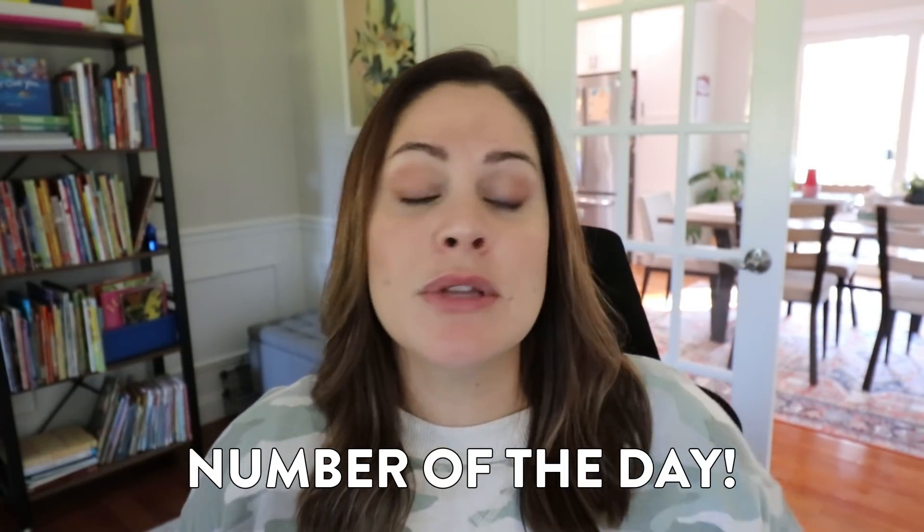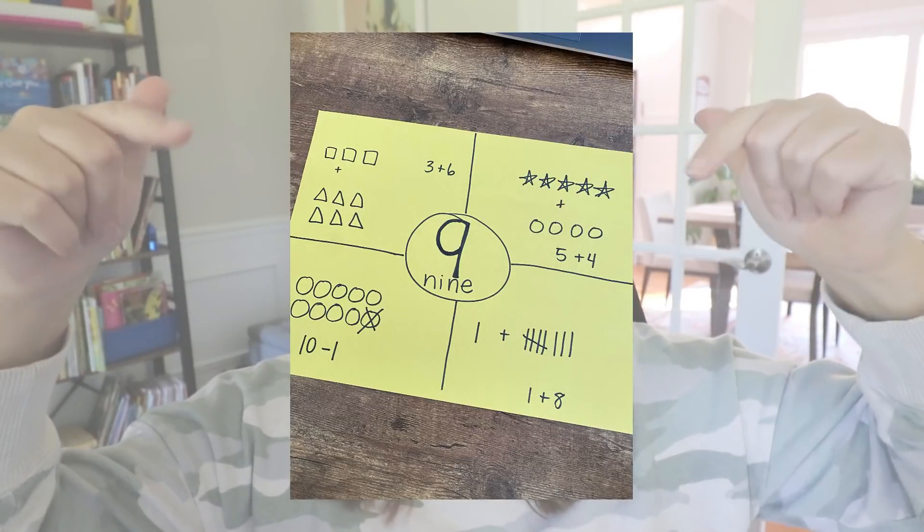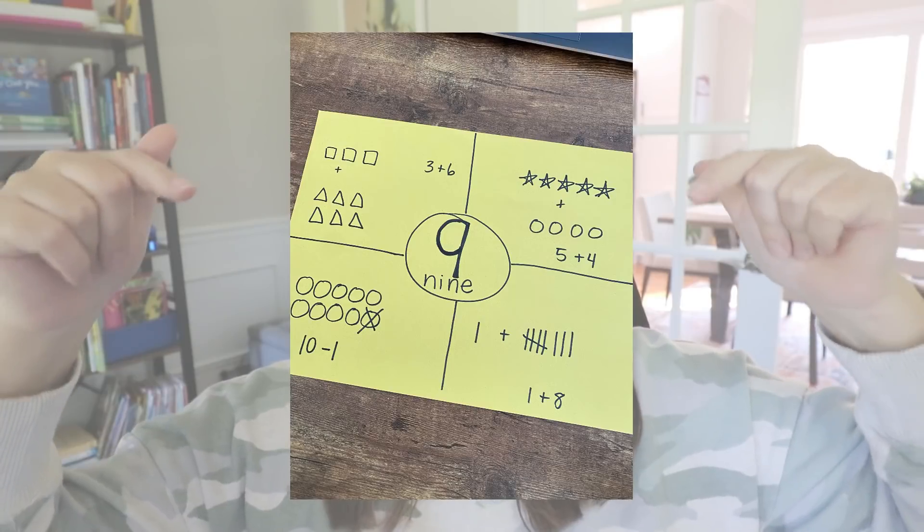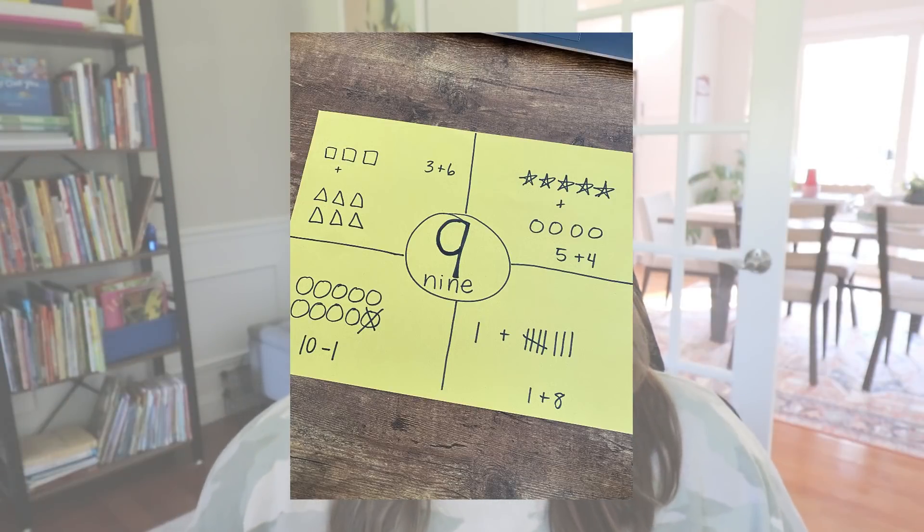Another easy way to implement fluency practice is to have a number of the day. You don't have to do this every day, but as a warm-up you can simply give students a number — let's say nine — and have them separate their paper into four quadrants and show four different ways to make that number. And lastly, during calendar or morning meeting time, you may want to throw in some addition and subtraction facts for students to solve during the activity portion of that time.